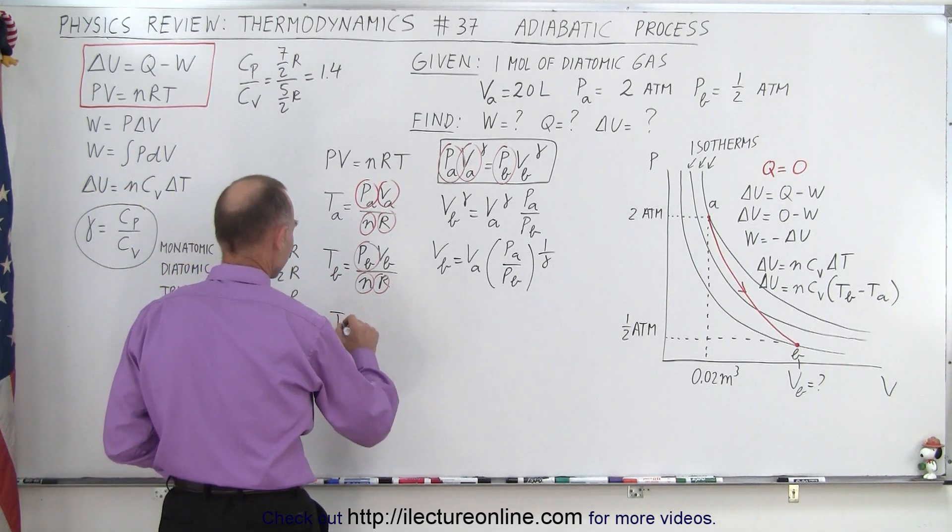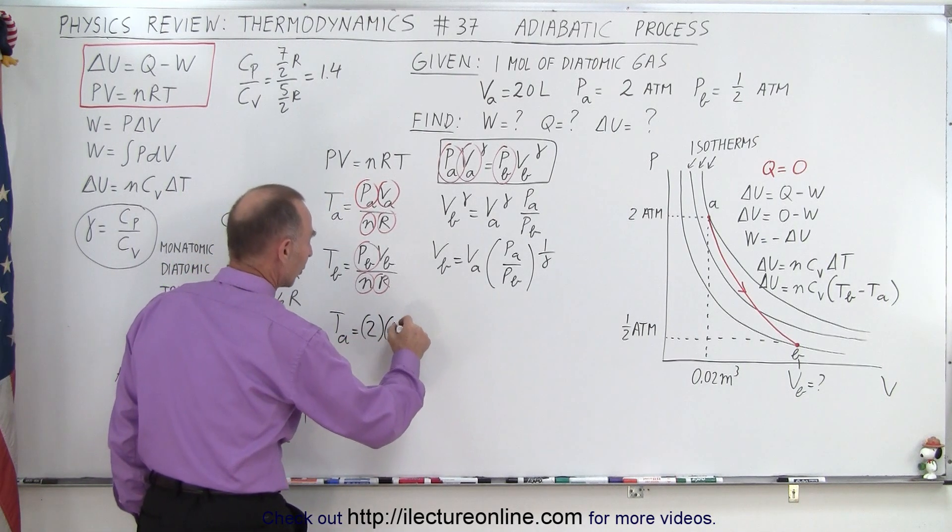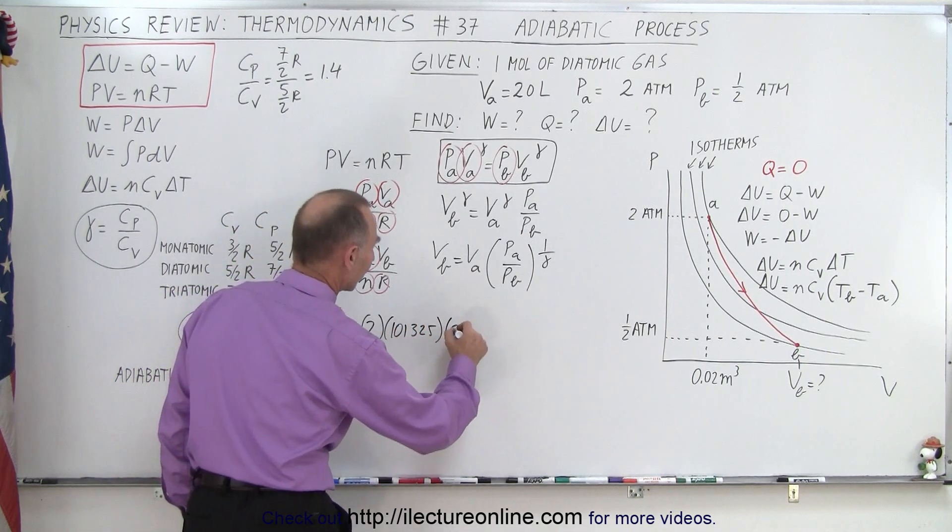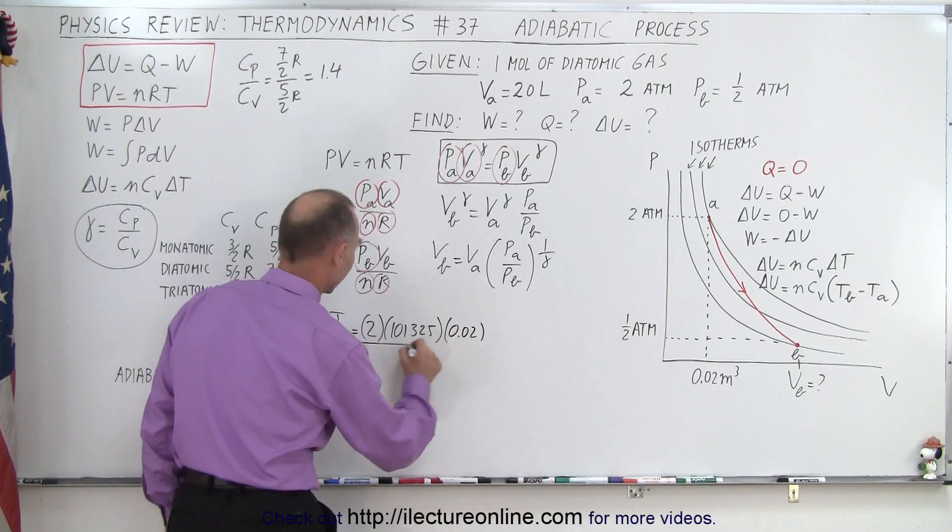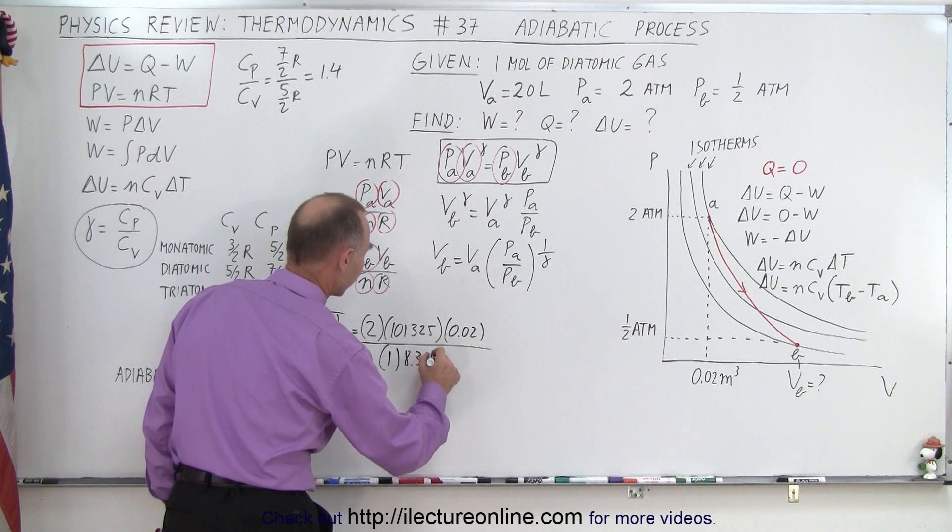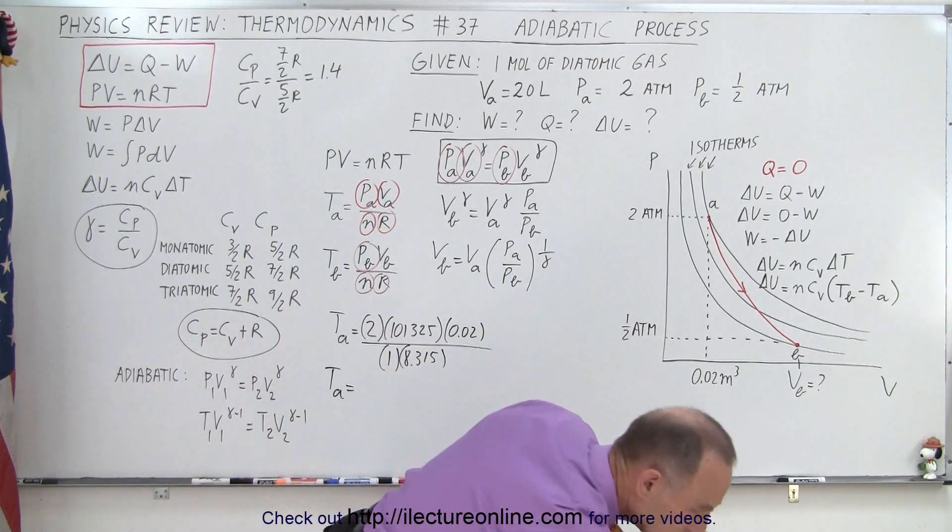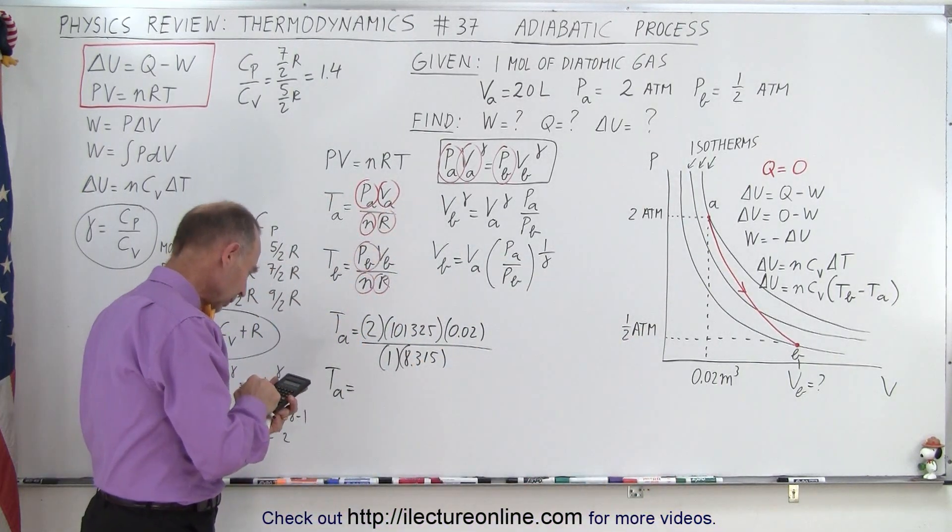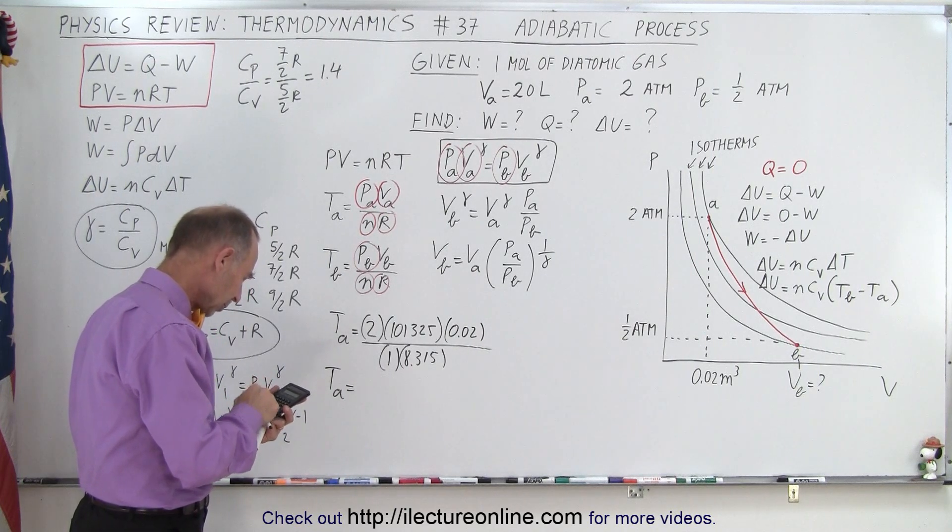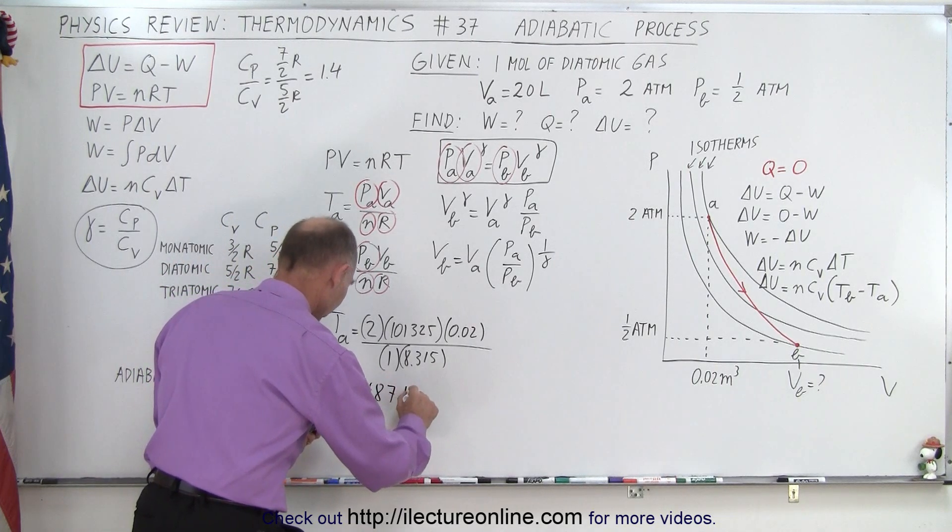So for T_A, that is equal to pressure at A, that's 2 times 101,325 times volume at A, which is 0.02 divided by 1 times 8.315. And so T at A is equal to 101,325 times 2 times 0.02 divided by 8.315. That gives us 487.4 Kelvin.